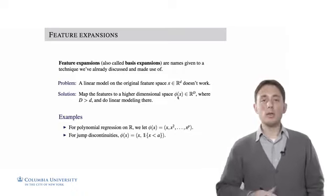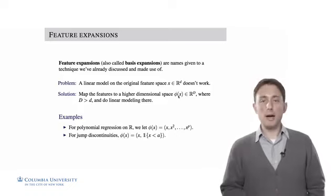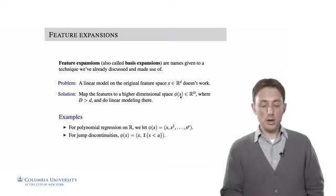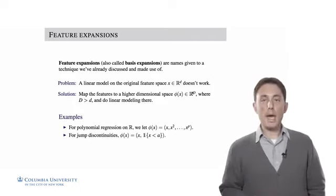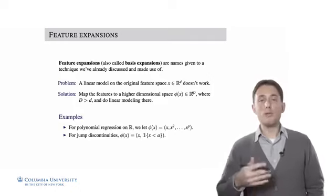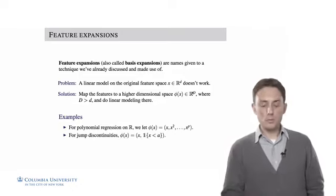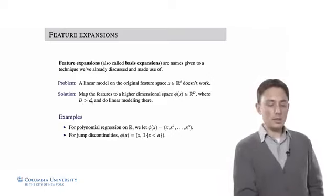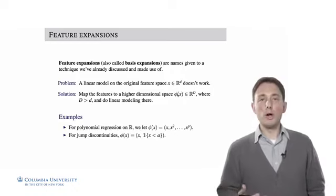We're going to formalize this a bit more and say that the mapping function is phi. This function phi takes in a vector x in R^d (little d) and maps it to a higher dimensional space R^D (capital D) — it could be some subset of R^D, but we'll just say R^D — where big D is greater than little d. And then once we embed each point in that higher dimensional space, we're going to do our linear model there.